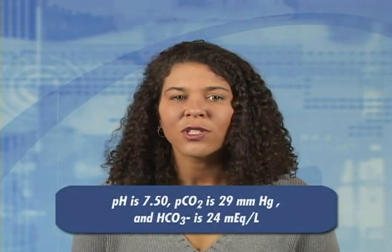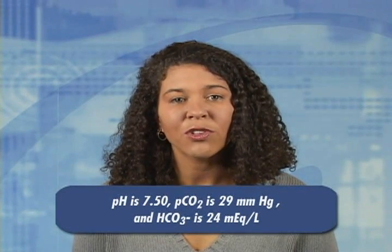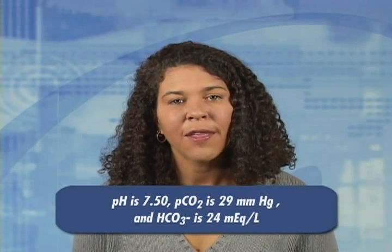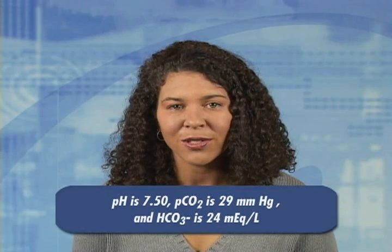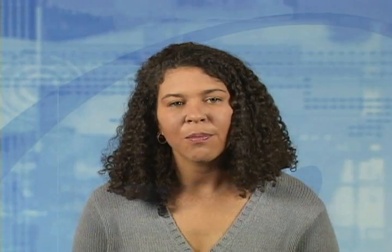Let's look at client number 7. The pH is 7.50, PCO2 is 29 mmHg, and HCO3 is 24 mEq/L. The pH is high, so we know there is alkalosis. We must determine whether the origin is respiratory or metabolic. The PCO2 is decreased, so it is clear that there is a loss of respiratory acid. The HCO3 is normal, so no metabolic excesses exist. There is no evidence of compensation. This ABG is accurately interpreted as acute respiratory alkalosis.